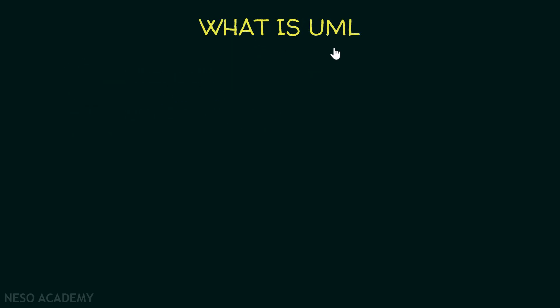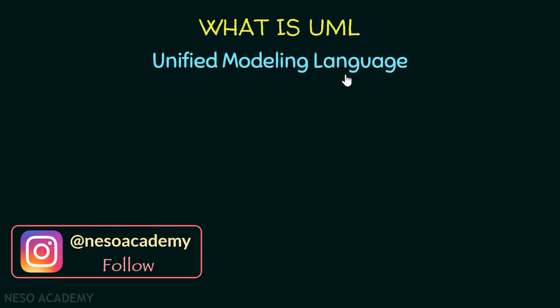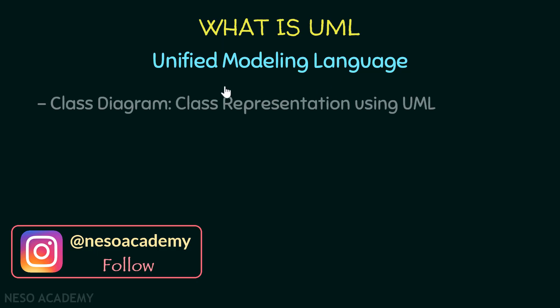What is UML? UML stands for Unified Modeling Language. We use this language in order to create diagrams in computer science. For example, we can create a class diagram, also called a UML class diagram. This class diagram is a class representation using UML.